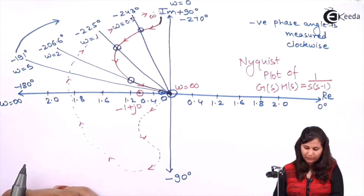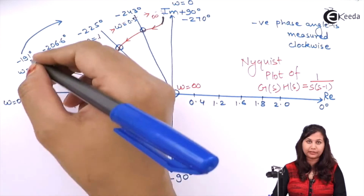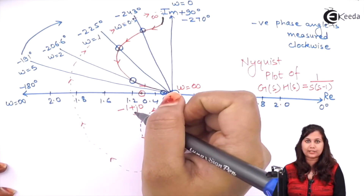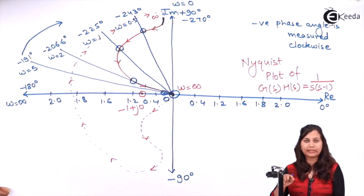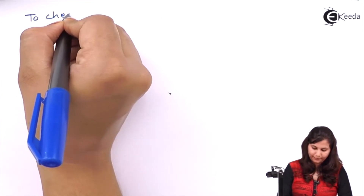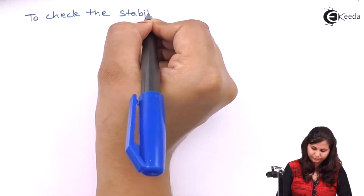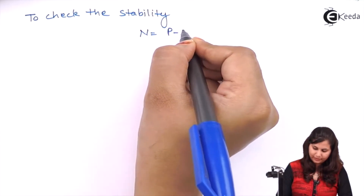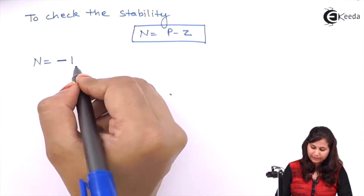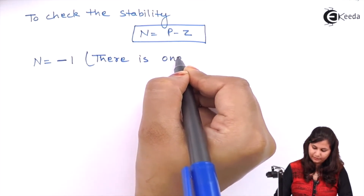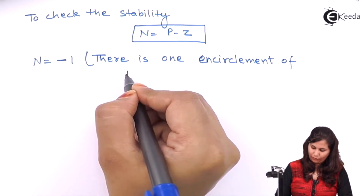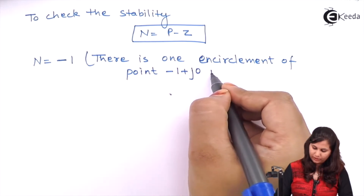To check the stability we will now count the encirclements of the point −1 + j0. There is 1 encirclement, and since it is in the clockwise direction, we take it as negative. So N = −1. Using the Nyquist criterion: N = P − Z.